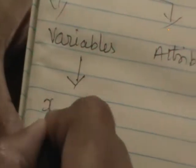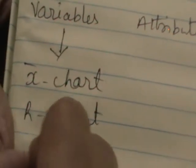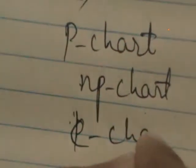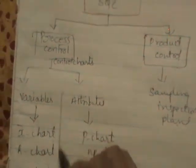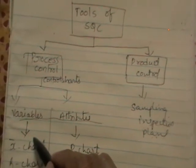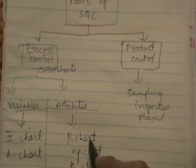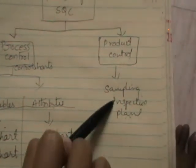Under control charts for variables, you will have the X-bar chart, R chart, and Sigma chart. Under control charts for attributes, you will find the P chart, NP chart, and C chart. So process control can be achieved by control charts, classified into control charts for variables — X-bar chart, R chart, Sigma chart — and control charts for attributes — P chart, NP chart, and C chart. Product control can be achieved by sampling inspection plans.